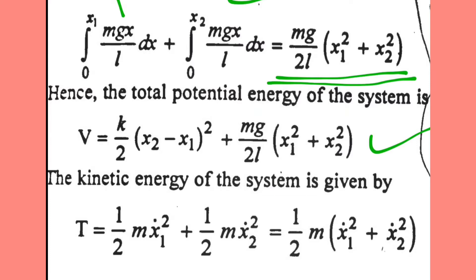The kinetic energy of the system is given by the regular formula: T = 1/2 * m * X1_dot^2 + 1/2 * m * X2_dot^2, which simplifies to T = (m/2) * (X1_dot^2 + X2_dot^2). The total energy of the coupled oscillatory system consists of kinetic energy T = (m/2) * (X1_dot^2 + X2_dot^2) and potential energy V = K/2 * (X2 - X1)^2 + (mg / 2L) * (X1^2 + X2^2).